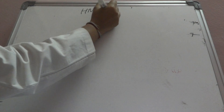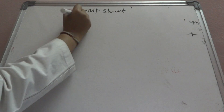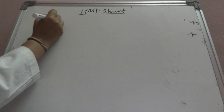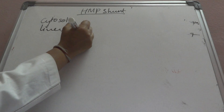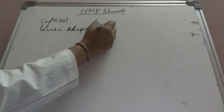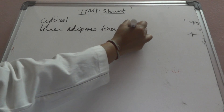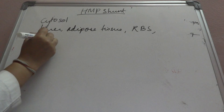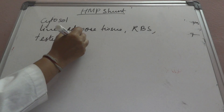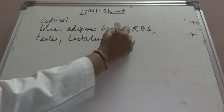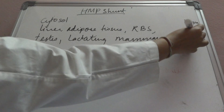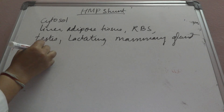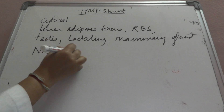Hello everybody. Today we will discuss the Hexose Monophosphate Shunt. The most important reaction of the carbohydrate metabolism which takes place in the cytosol of the liver, adipose tissue, RBC, testes, and lactating mammary gland. It is important because it provides NADPH, which is most important in fatty acid synthesis.